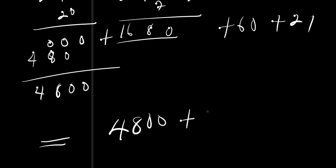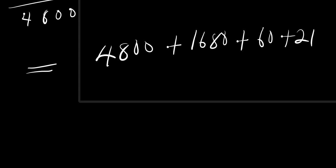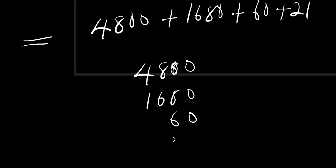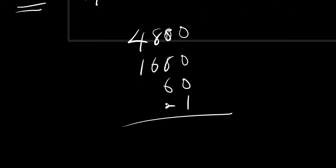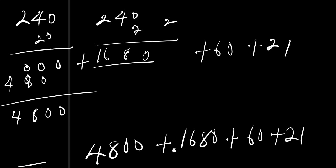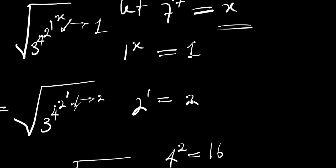Then 3 times 7 is 21. Adding everything up: 4800 plus 1680 plus 60 plus 21. Adding the digits: 8 plus 6 is 14, plus 2 is 16 — write 6 carry 1; 9 plus 6 is 15 — write 5 carry 1; 5 plus 1 is 6. So the final answer is 6561.